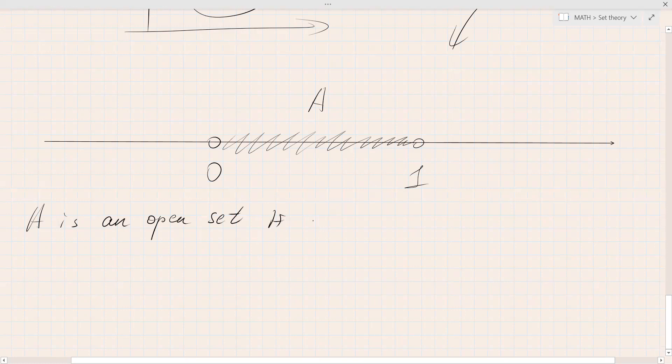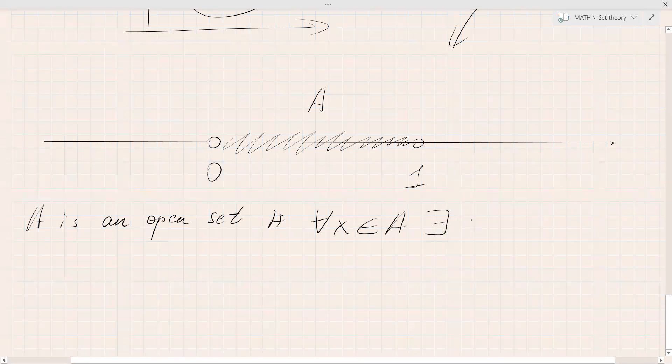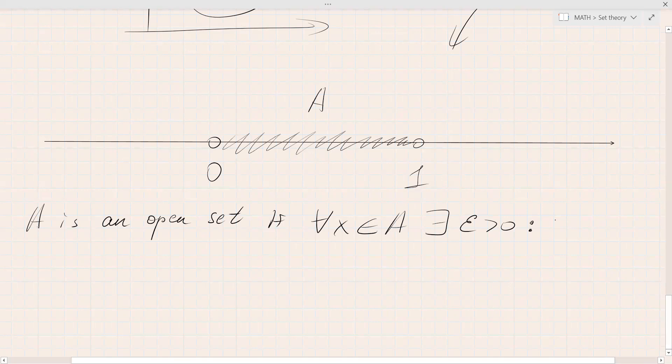A is an open set if for any x that belongs to A, there exists an epsilon greater than zero such that epsilon neighborhood of x is a subset of A.